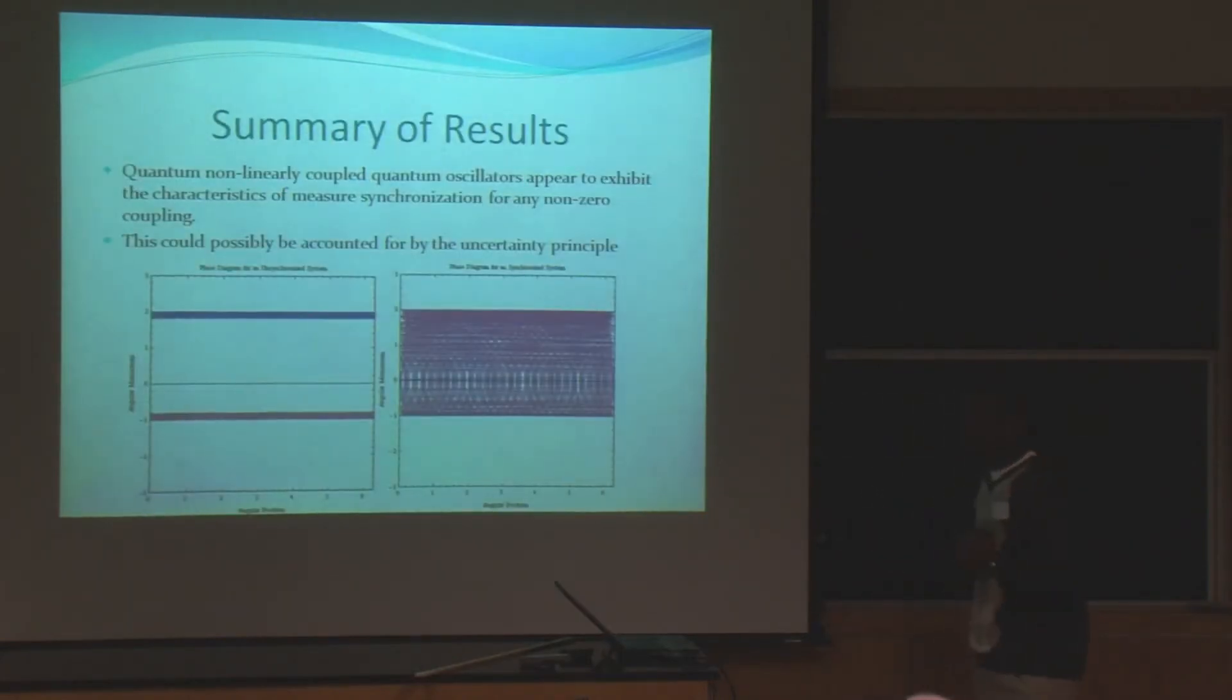So, in summary, it seems as if quantum systems always exhibit the properties of measure synchronization, as opposed to being either not measure synchronized, reaching a certain value, and then drastically changing the phase. It seems to always be measure synchronized, but you see sort of degrees of differences, like some graphs would take a lot longer to fill the entire range of angular momentums. Now, we believe that this could possibly be accounted for by the uncertainty principle.